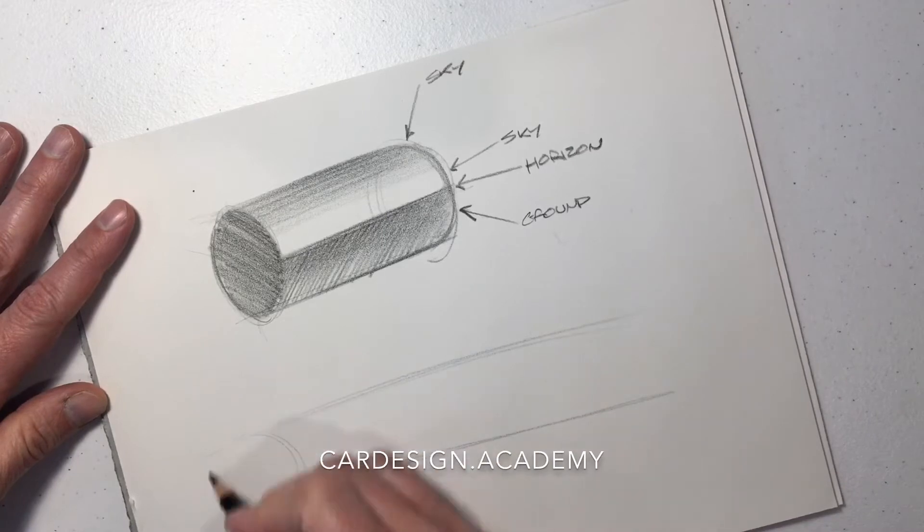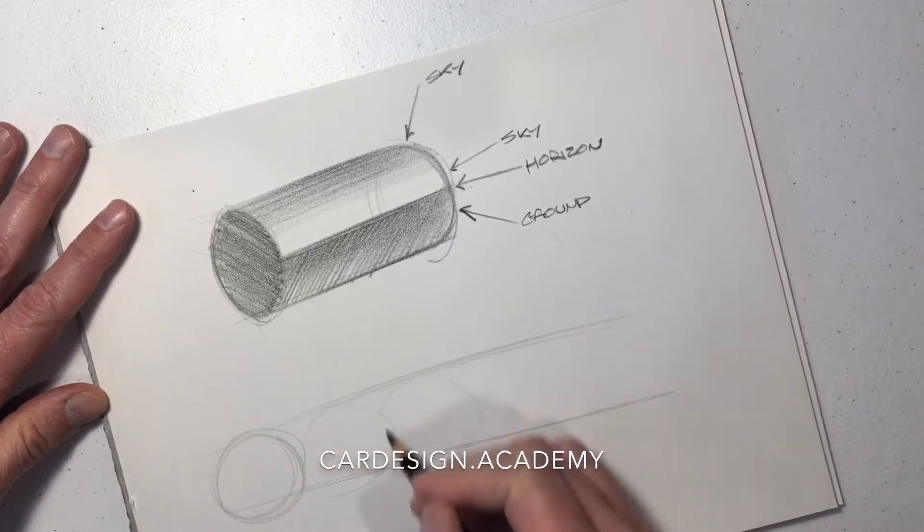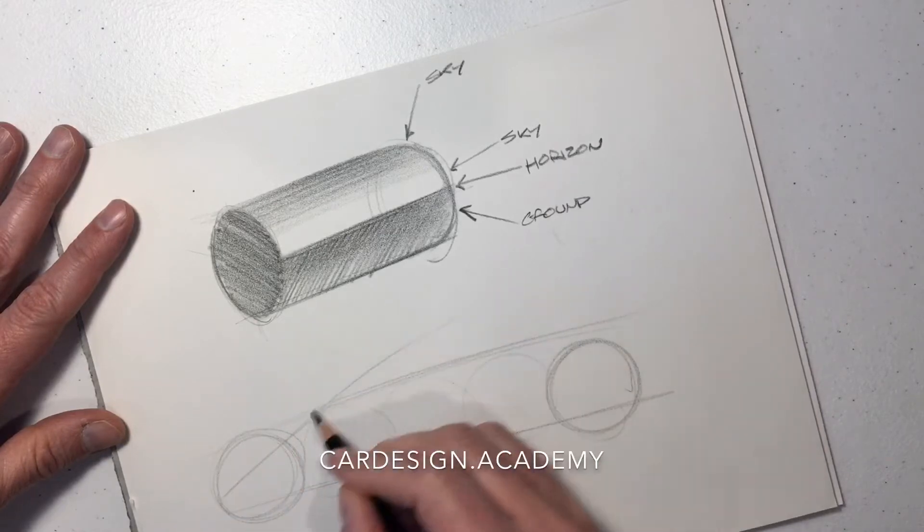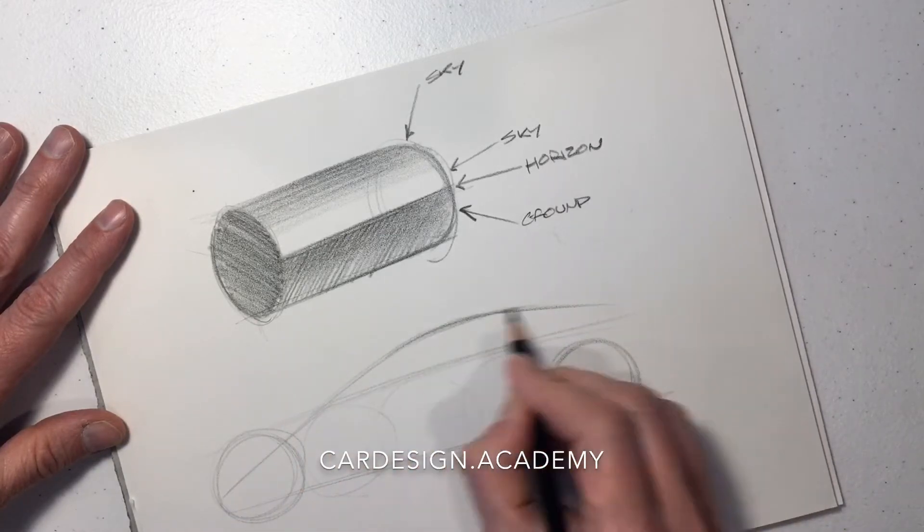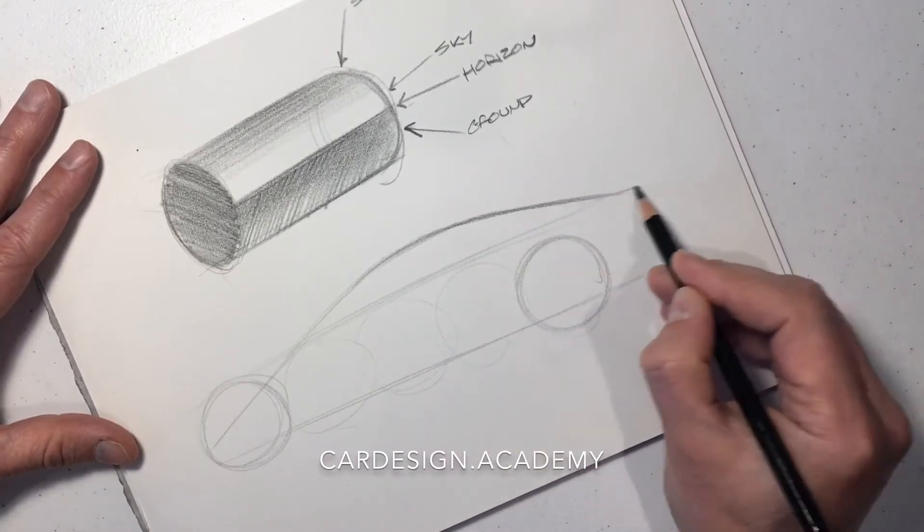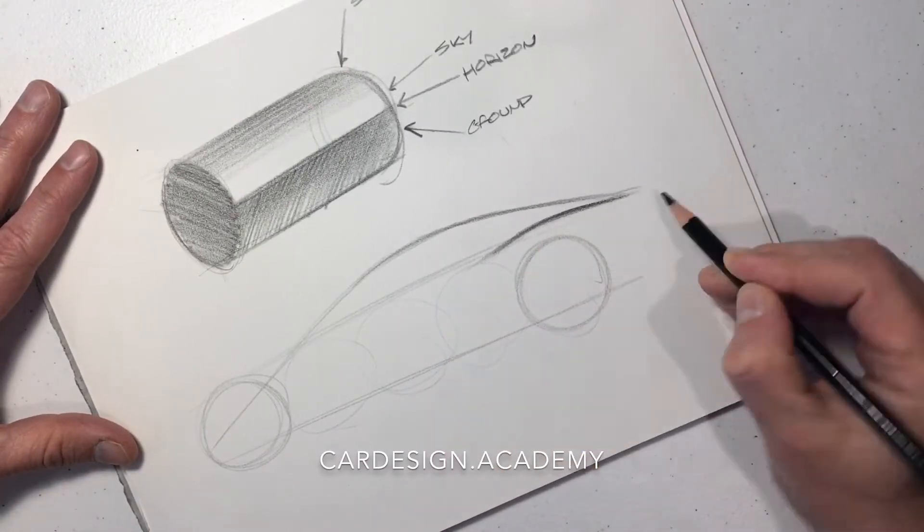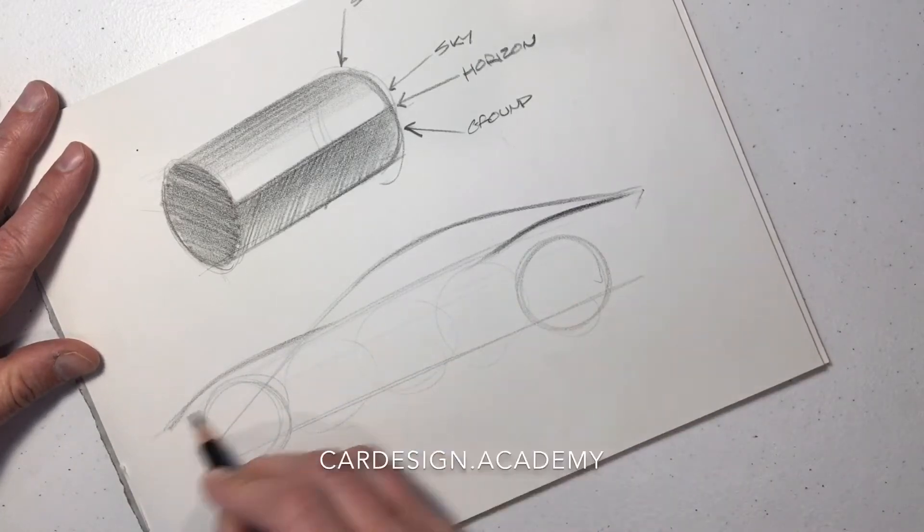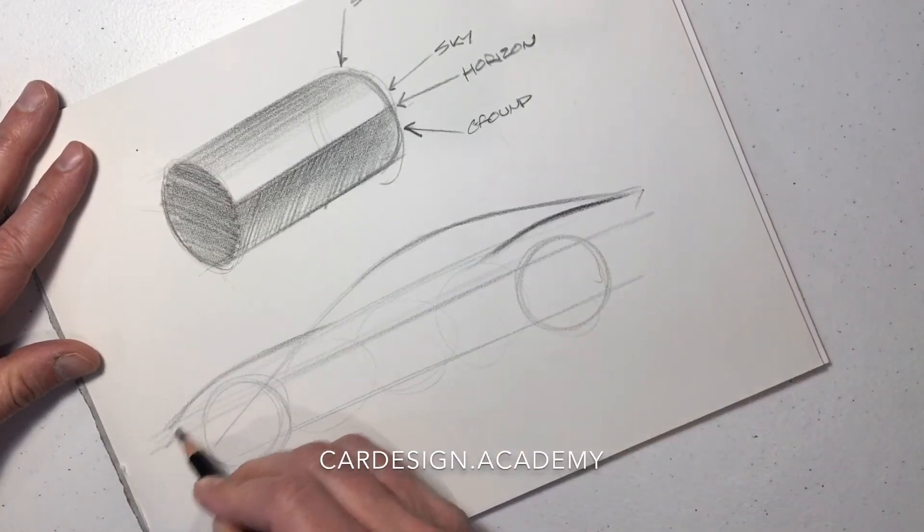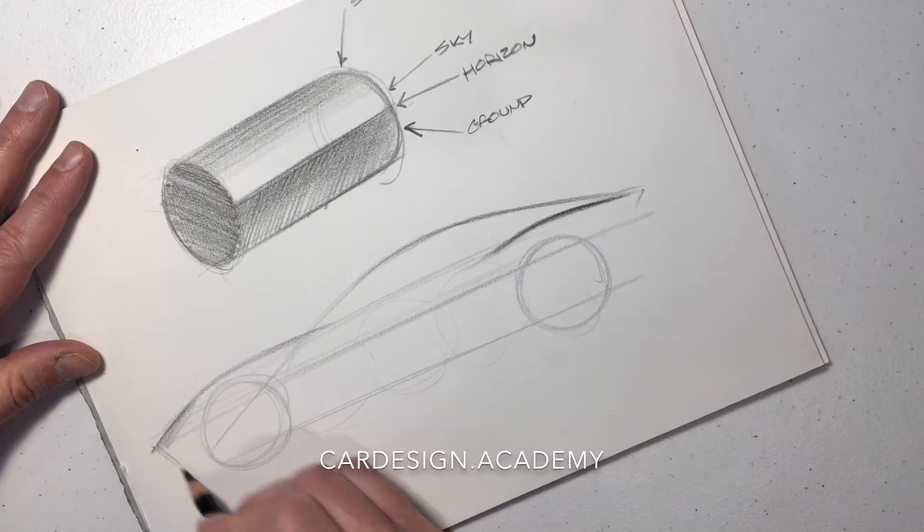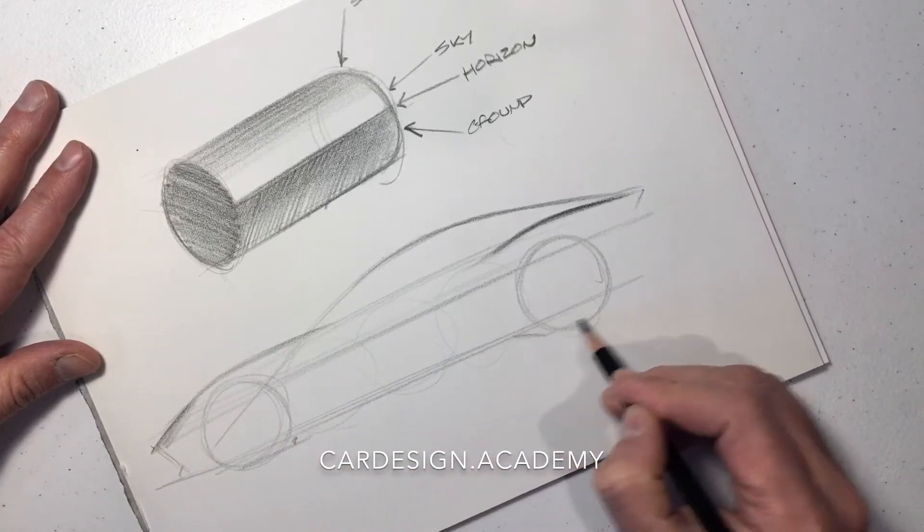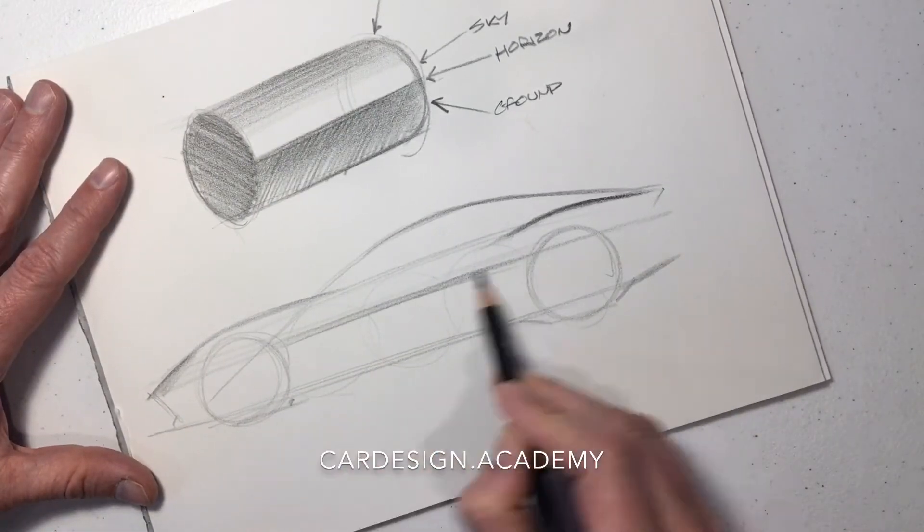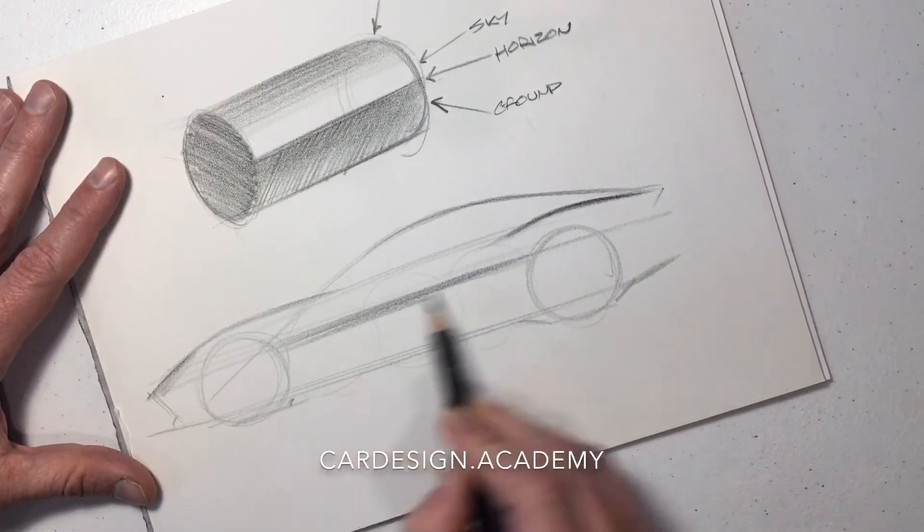Now we're going to draw a side view of a vehicle and show how that basic cylindrical section can be rendered. There's your horizon line, just like the cylinder.